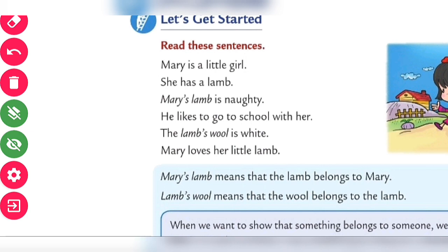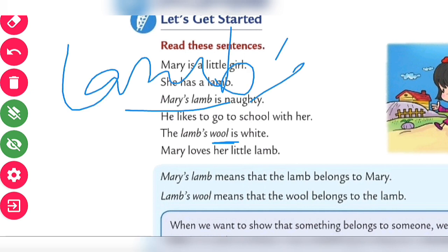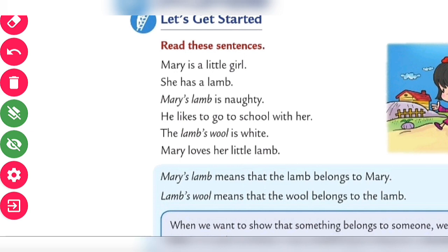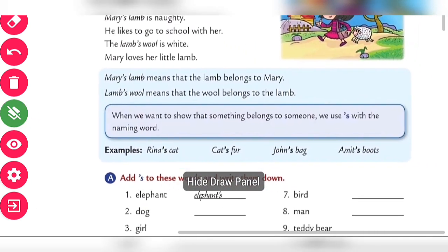The lamb is very naughty and likes to go to school with her. The lamb's wool is white — here the wool belongs to the lamb, so we write lamb's wool. Mary's lamb means the lamb belongs to Mary, and lamb's wool means the wool belongs to the lamb.